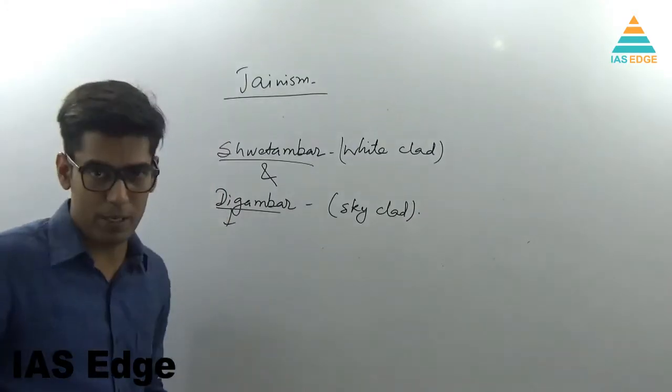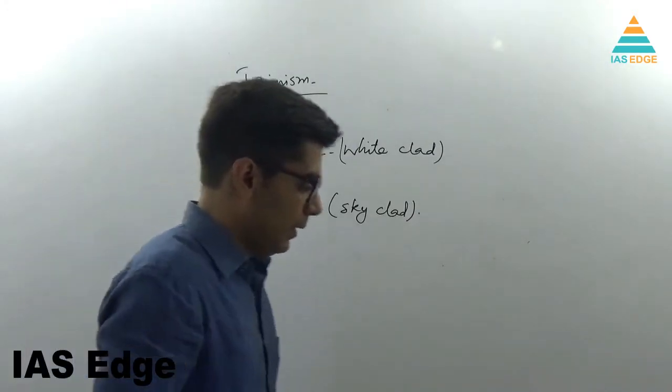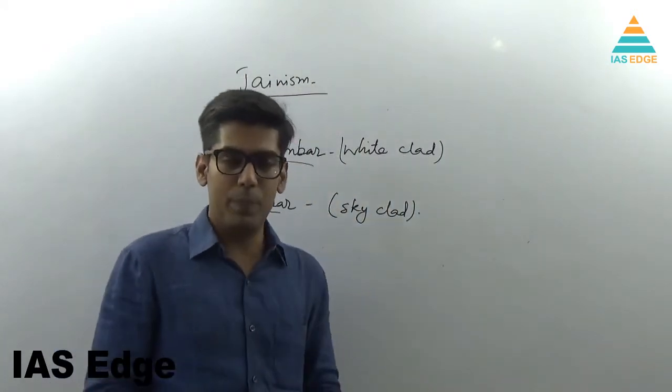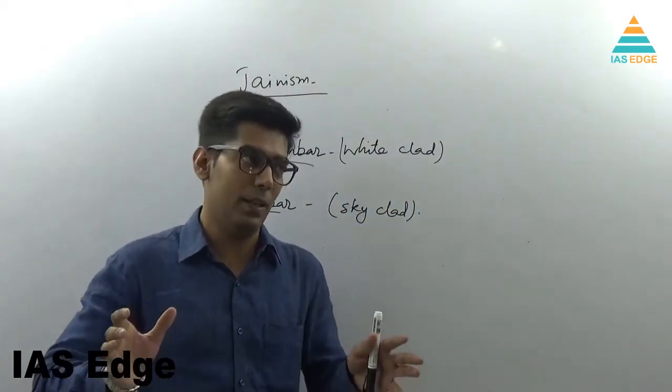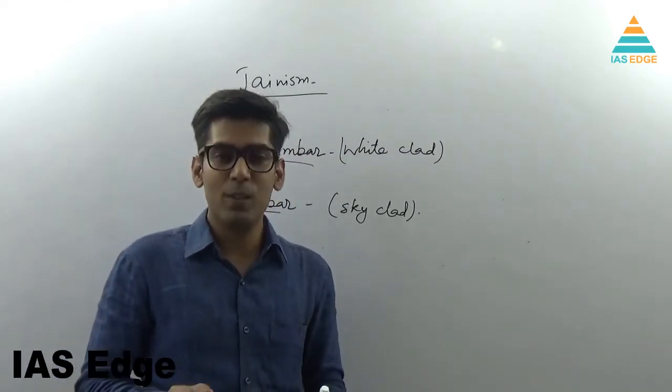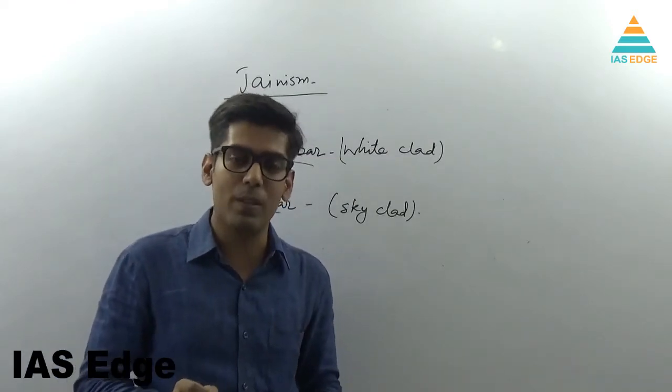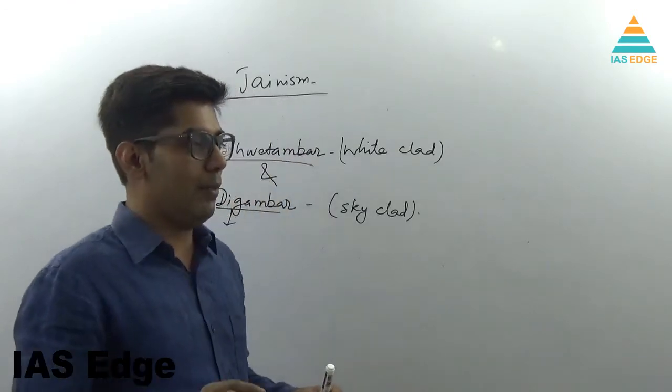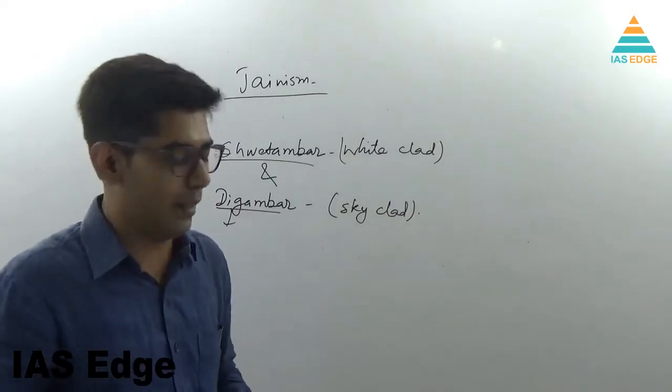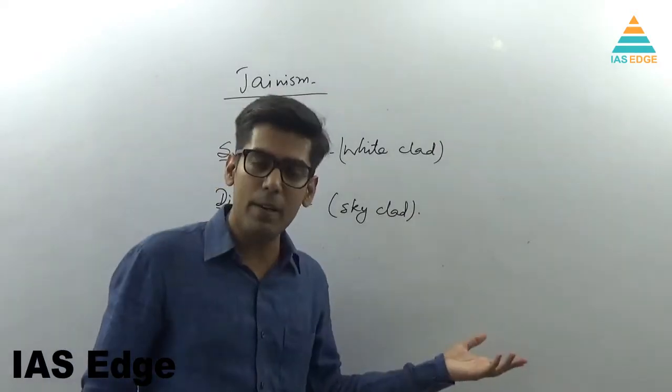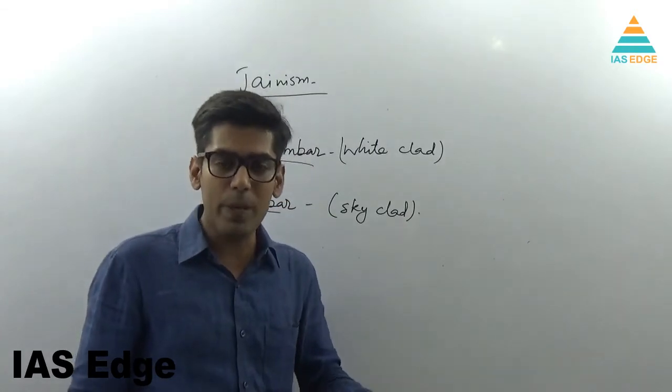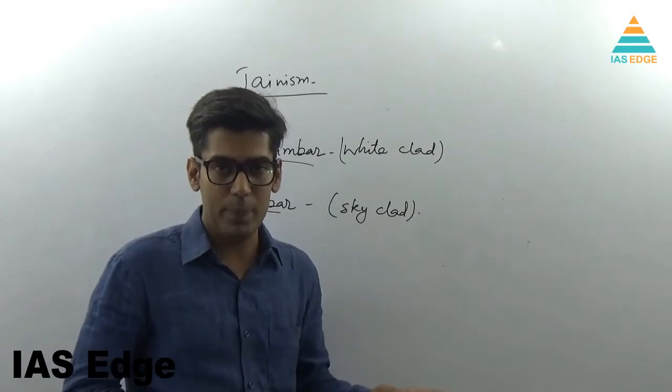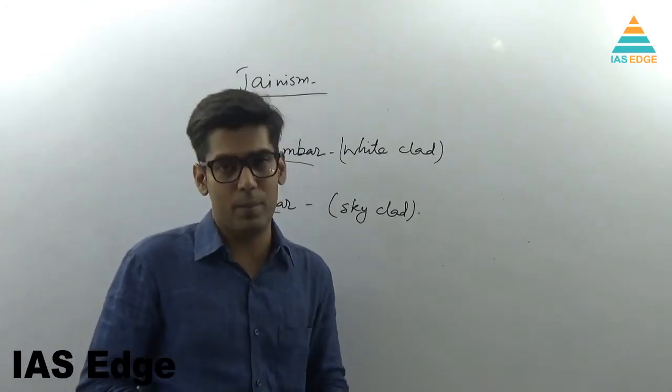These are the two main sects of Jainism. And they preach non-violence, they preach compassion. They are against accumulation of wealth. Aparigraha is the term they have used, that whatever is needed more than your consumption should not be kept by you. So please don't accumulate wealth is what they say. One of the basic tenets of Jainism is this.